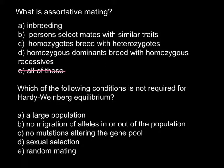Answer D — homozygous dominant breeds with homozygous recessive — looks like assortative mating because we have two different genotypes, and typically in simple Mendelian genetics that also means two phenotypes. But this is not assortative mating, so we cross out this answer. Answer C — homozygous breeds with heterozygous — also doesn't answer our question.